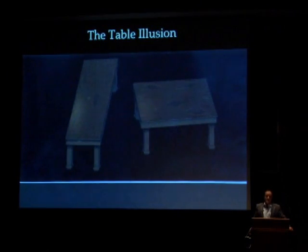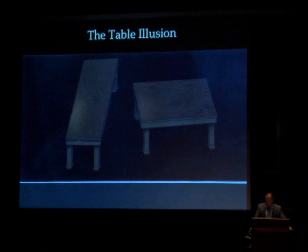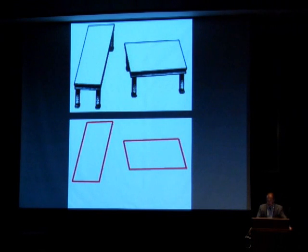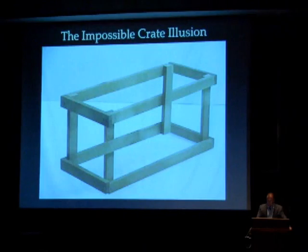For the table illusion, these are the exact same tables. It's just that if you put the legs in different places and reorient them, they look different. But on the bottom you can see they're the exact same rectangle.